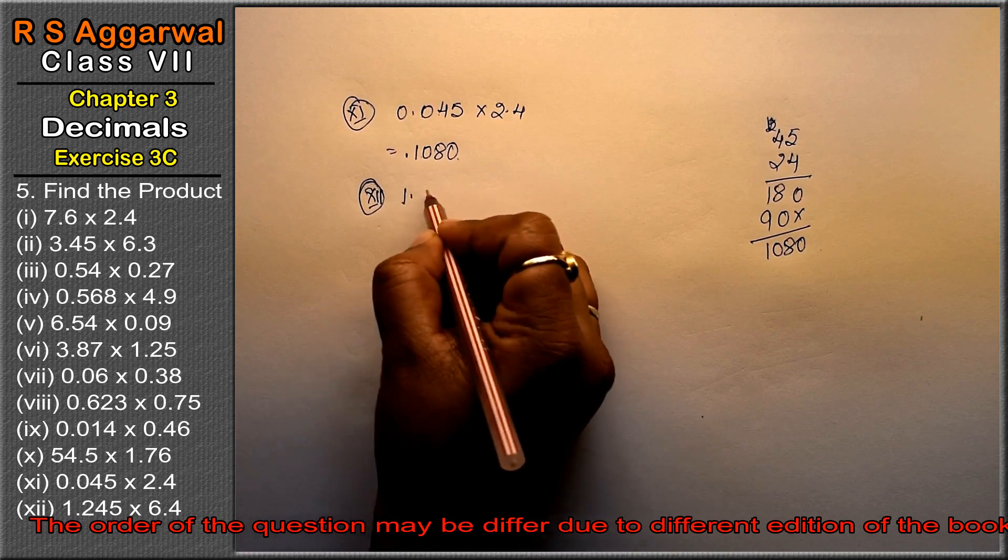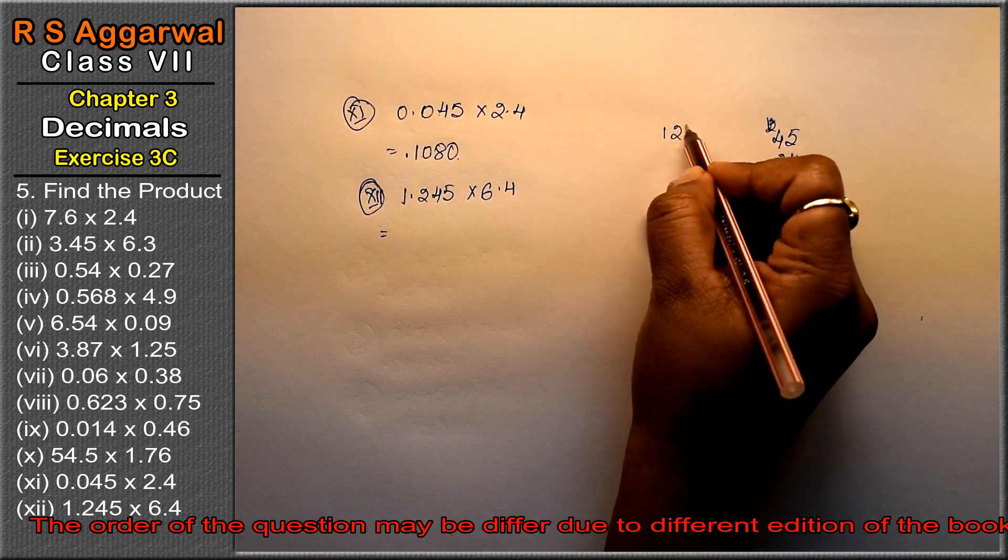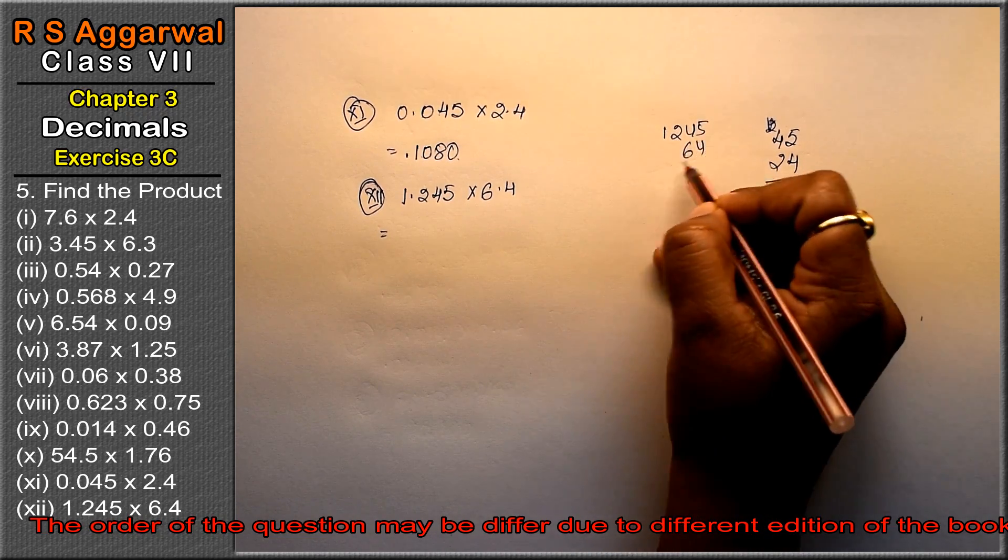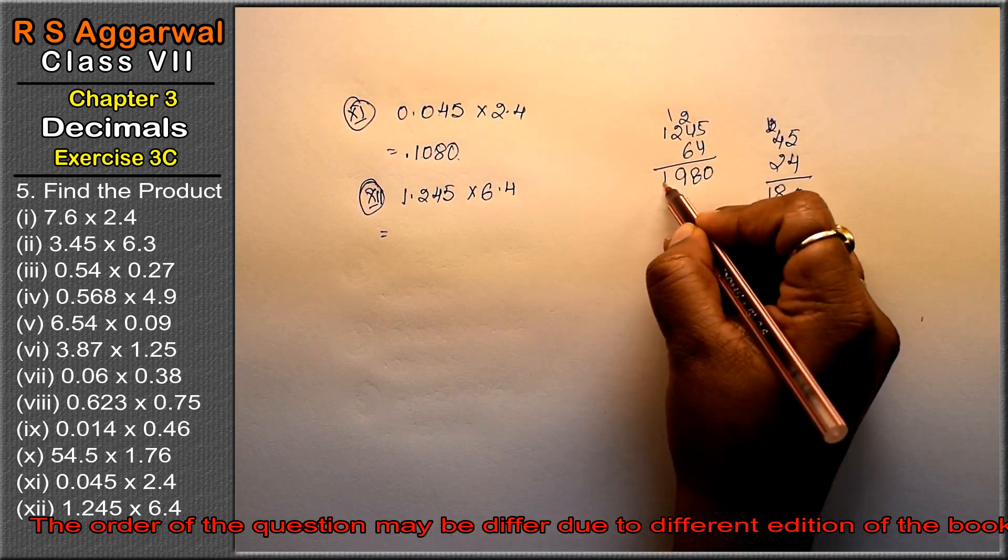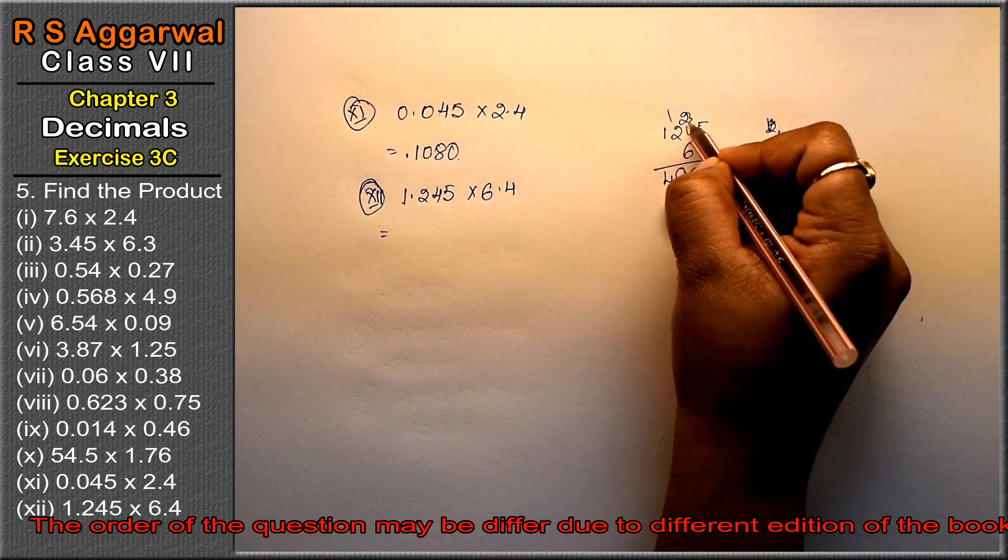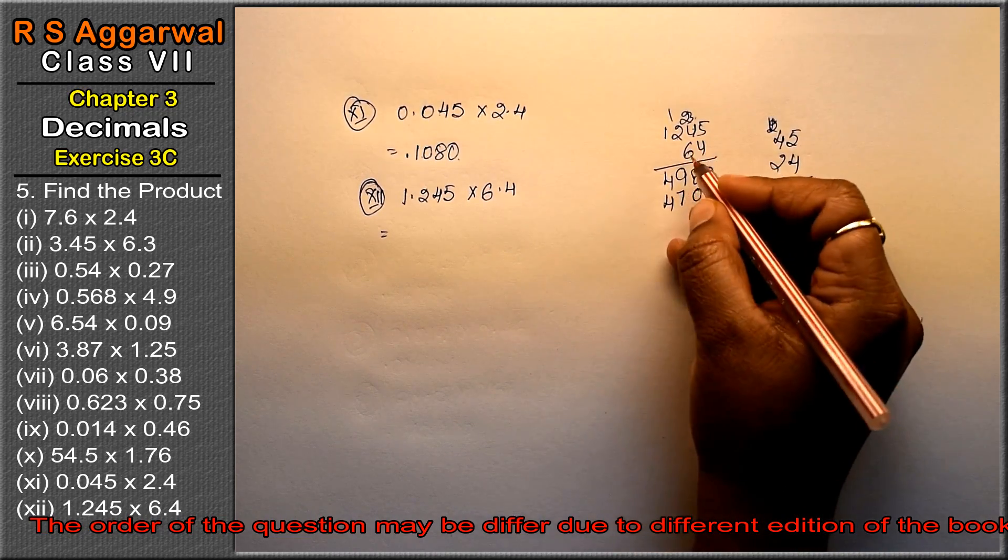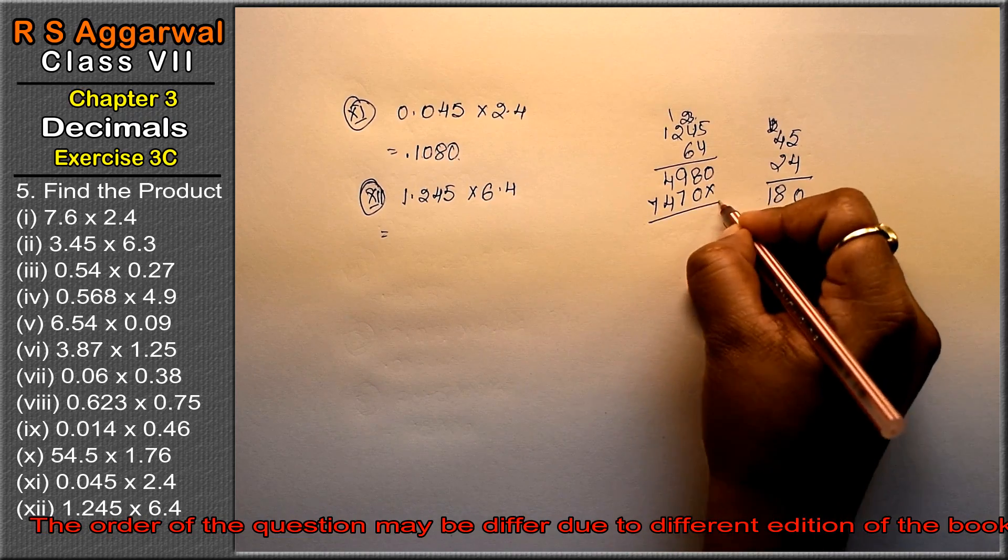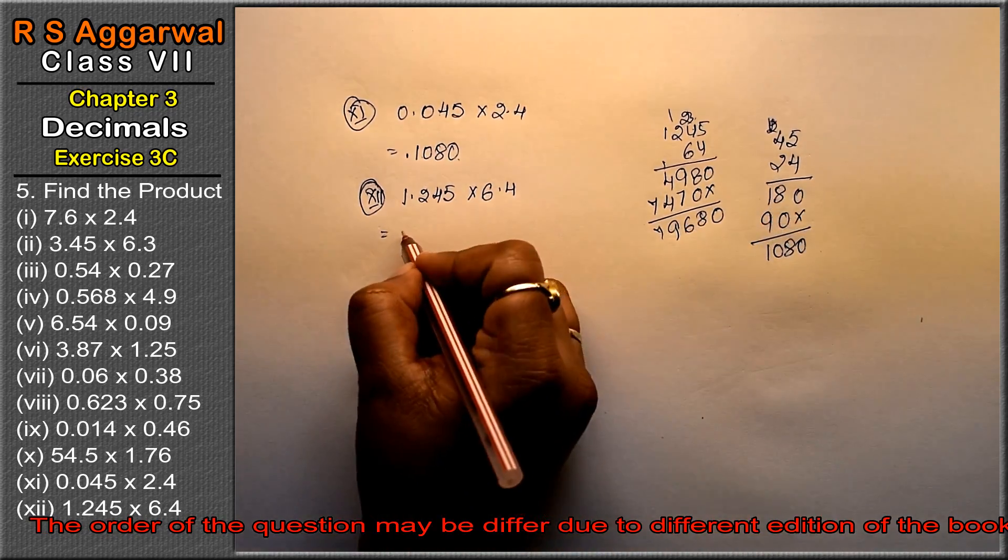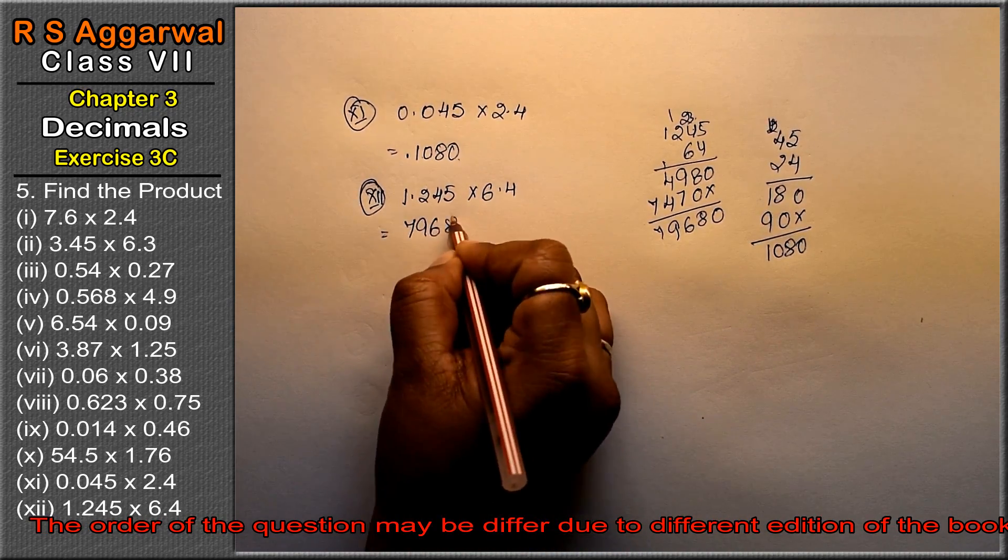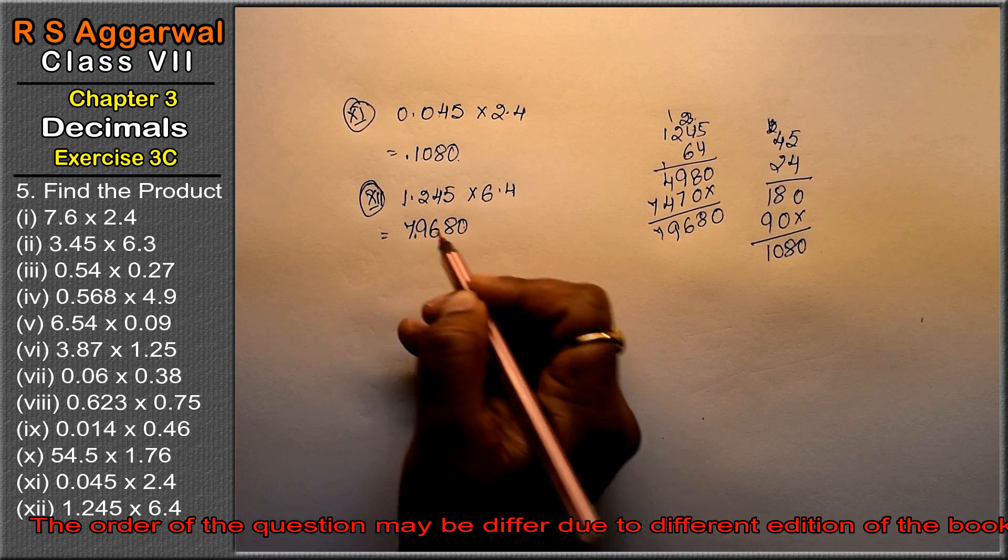Let's do twelfth part: 1.245 into 6.4. Multiply 1245 by 64. 4 times each digit gives first row. 6 times each digit with carrying gives second row. Add all: 79680. Point: 3 plus 1 is 4 decimal places. Count 1, 2, 3, 4 from right. Point comes after 4 digits: 7.9680 is the answer.